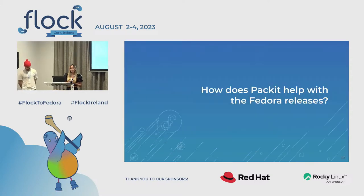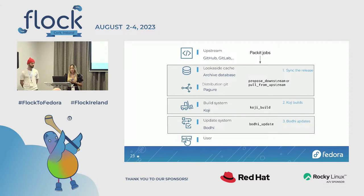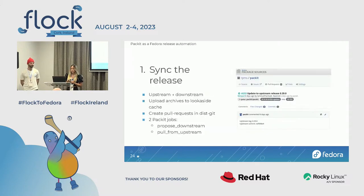How does Packit fit into these steps? Packit covers everything in the middle between the upstream and the user's installation of the new software. Packit has jobs that can be configured, and for Fedora release automation there are four jobs: syncing the release, building updates in Koji, and bringing those updates to Bodhi.